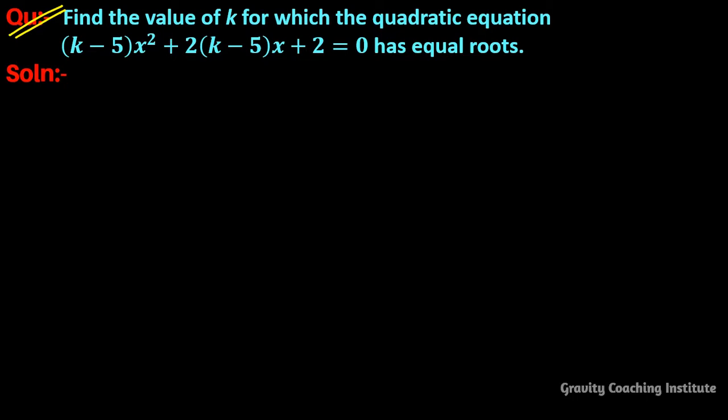Find the value of k for which the quadratic equation (k - 5)x² + 2(k - 5)x + 2 = 0 has equal roots. So here the quadratic equation is (k - 5)x² + 2(k - 5)x + 2 = 0.